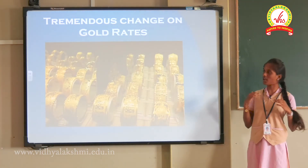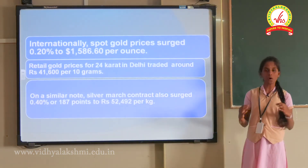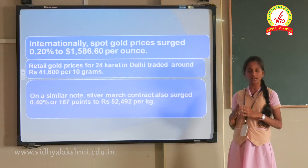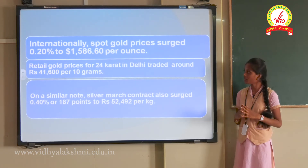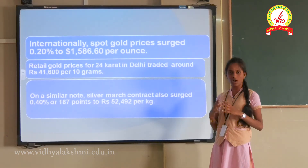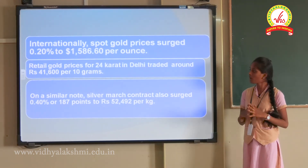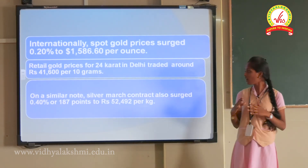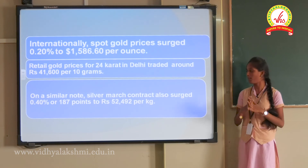Tremendous change in gold rates: Internationally, spot gold prices surged up to 0.20%, reaching $1,586 per ounce. Retail gold price for 24-karat gold in Delhi is around Rs. 41,600 per 10 grams. Similarly, silver also reached a high peak at around Rs. 52,492 per kg.